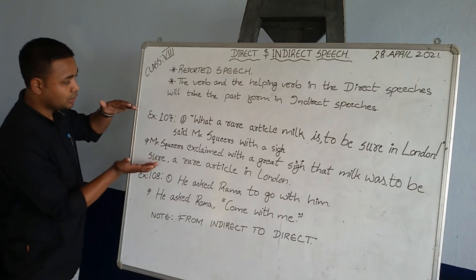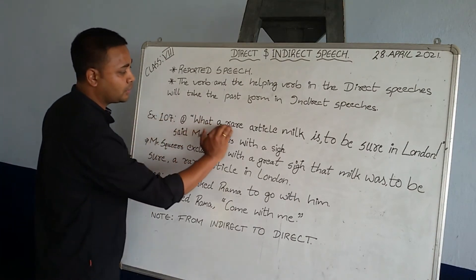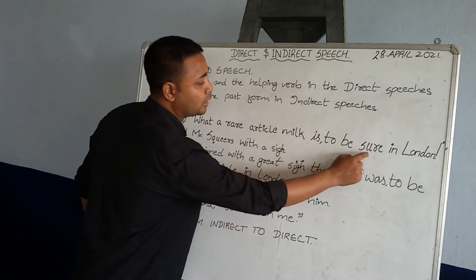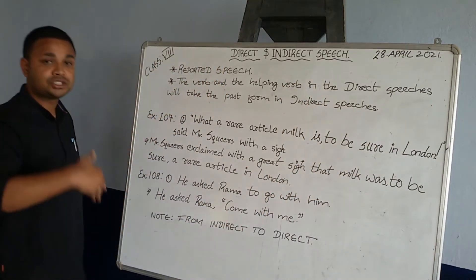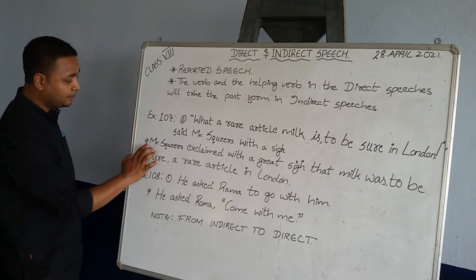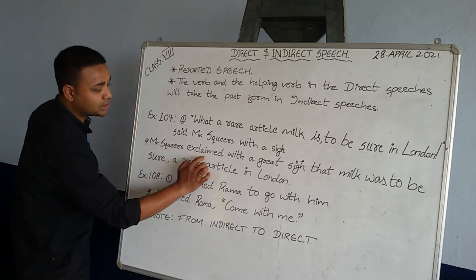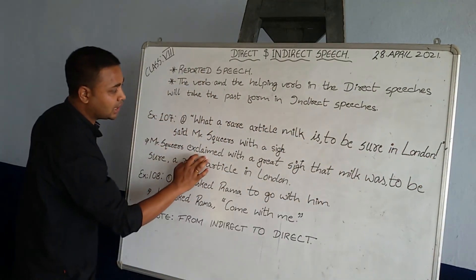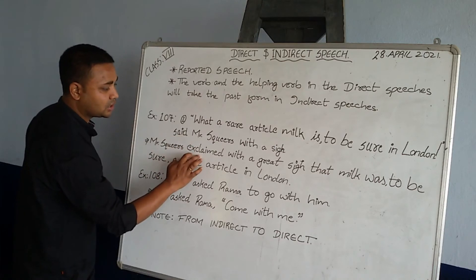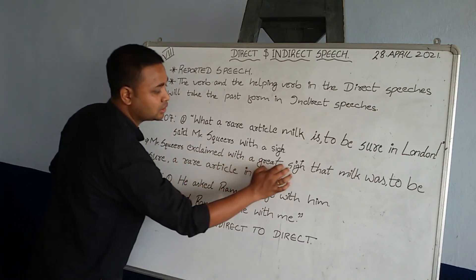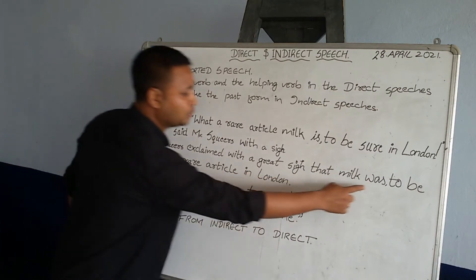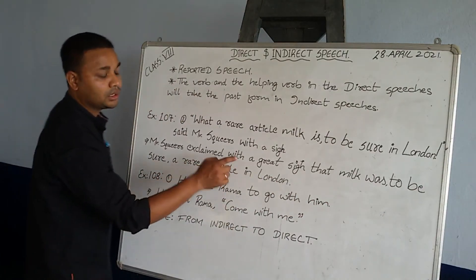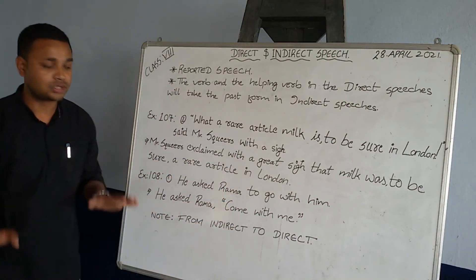Notice what happens in the conversion: in the direct speech, 'milk is' is in the present form, and 'to be sure' is also present. As we convert this into indirect speech, 'milk is' becomes 'milk was.' Also, because there is an exclamatory mark, we write 'exclaimed' instead of 'said' — Mr. Squeers exclaimed with great satisfaction that milk was to be sure a rare article in London. Everything remains the same except 'is' becoming 'was' and using 'exclaimed.'